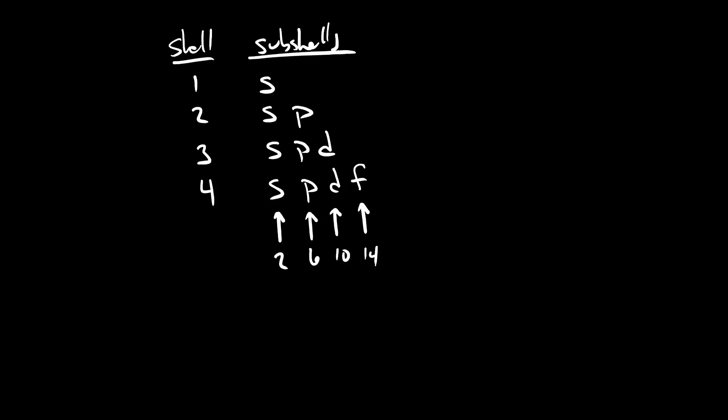In this video I'm going to introduce you to a new idea: orbitals. Electrons are grouped into shells, they're grouped into subshells, but they're also grouped into orbitals. The huge rule of thumb for every single orbital is each orbital can only hold two electrons. Orbitals can never ever hold more than two electrons.